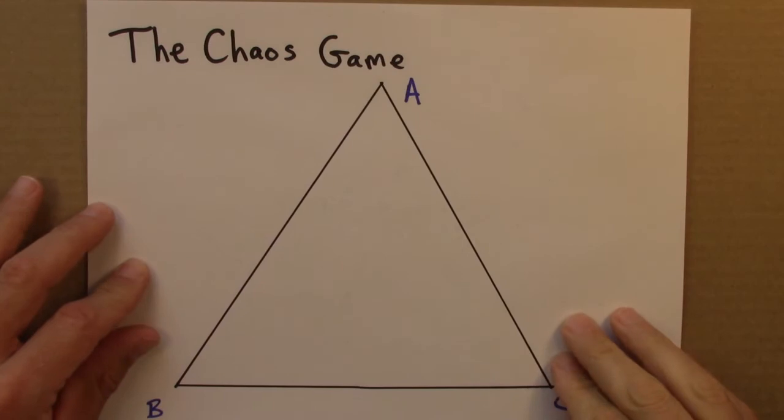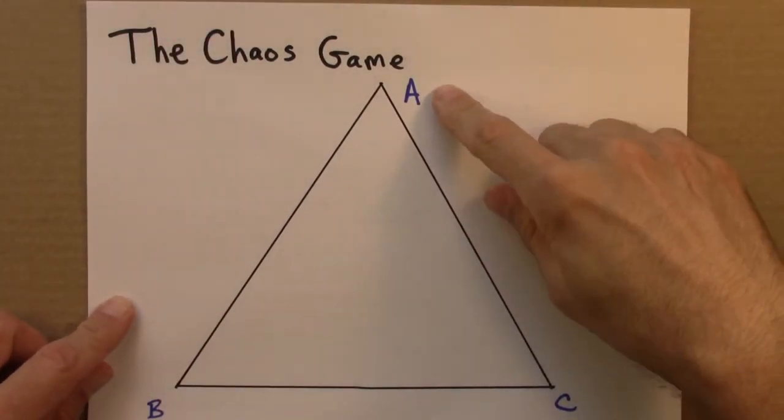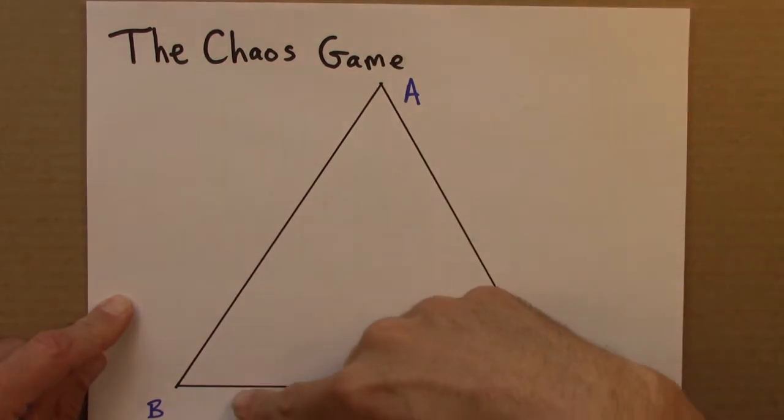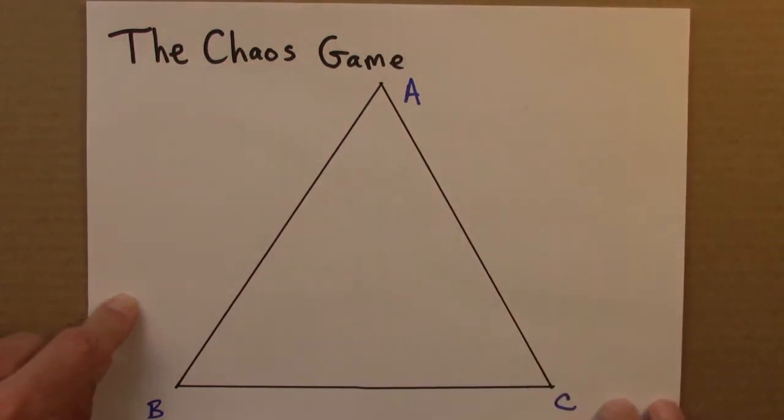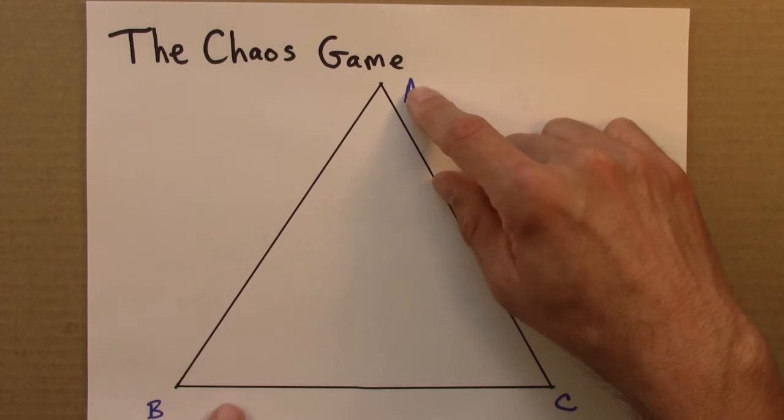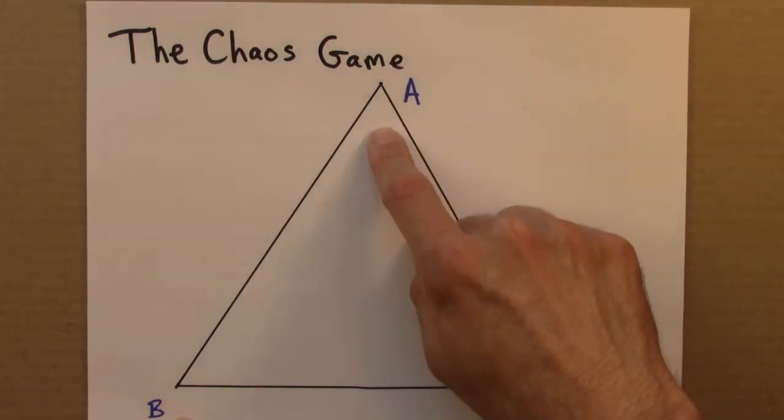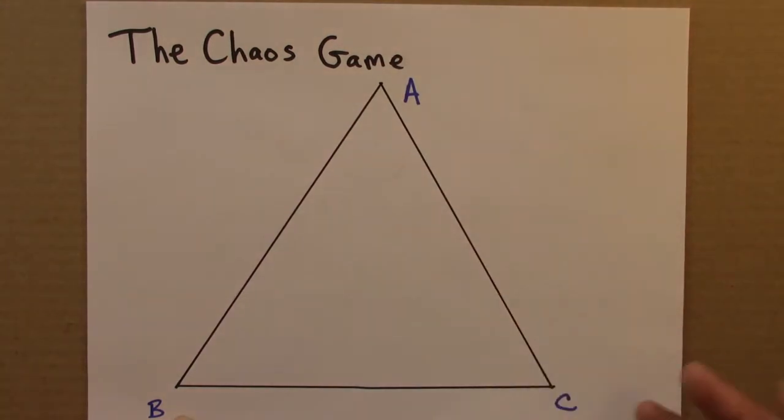So here's the setup for the chaos game. We start with a triangle, and I'll label the corners A, B, and C. I'm going to choose a starting point at random inside the triangle, and then I'm going to choose at random one of the three corners, and I'm going to move halfway towards that corner, and then I'm going to repeat that step.